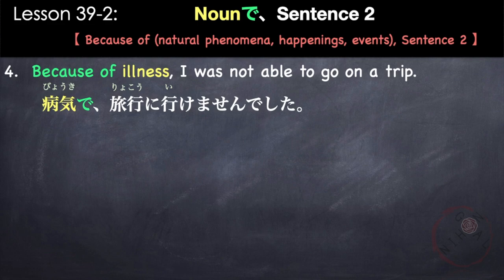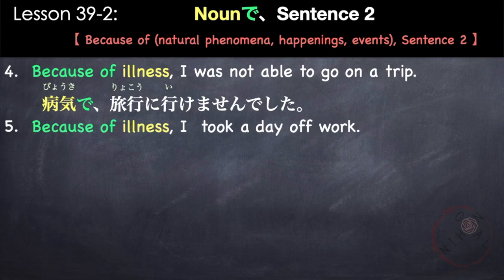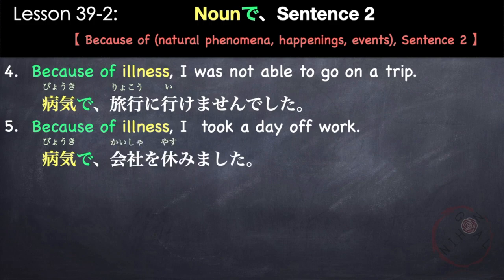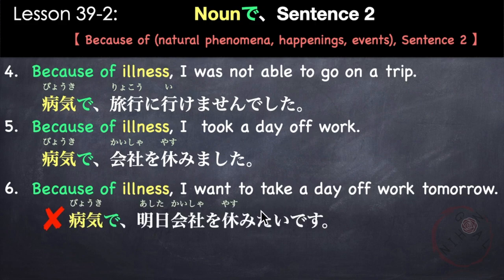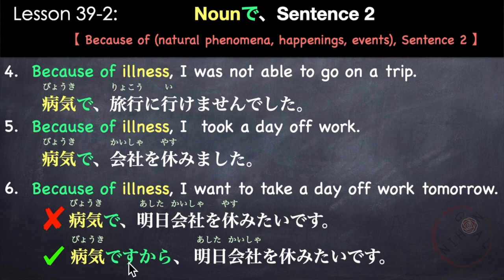病気で、旅行に行けませんでした。 Because of illness, I was not able to go on a trip — this uses a negative potential verb, which is acceptable. 病気で、会社を休みました。 Because of illness, I took a day off work — also okay because it's in the past. However, 'Because of illness, I want to take a day off work tomorrow' is volitional, so we must say: 病気ですから、明日会社を休みたいです。